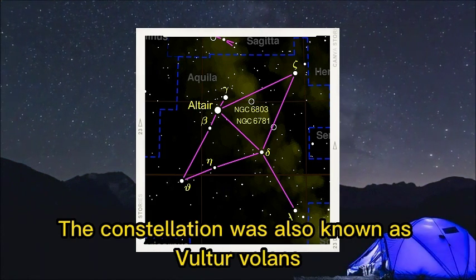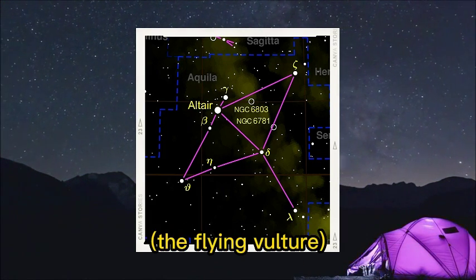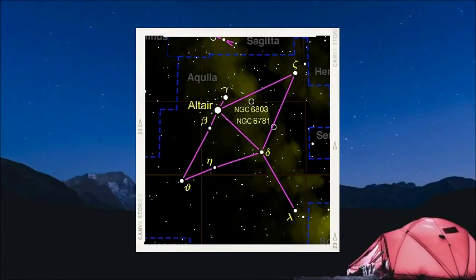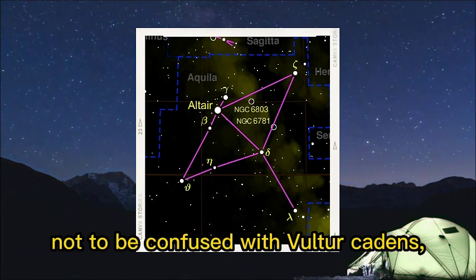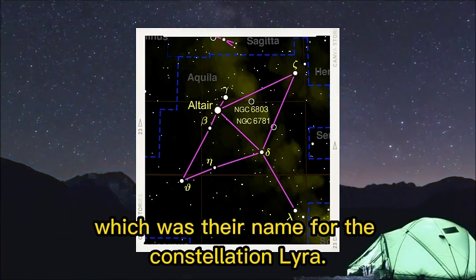The constellation was also known as Volter Volans, the flying vulture, to the Romans, not to be confused with Volter Cadens, which was their name for the constellation Lyra.